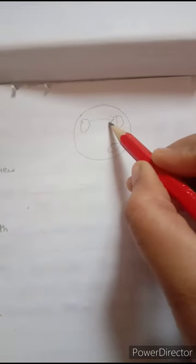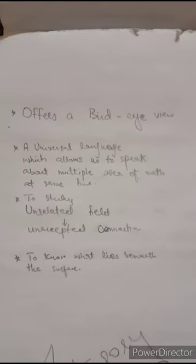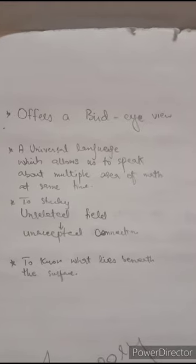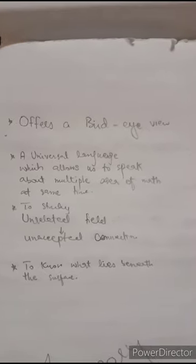From this view we can observe what kind of things and what kind of objects we can relate to each other. Category theory is basically a universal language which allows us to speak about multiple areas of maths at the same time.